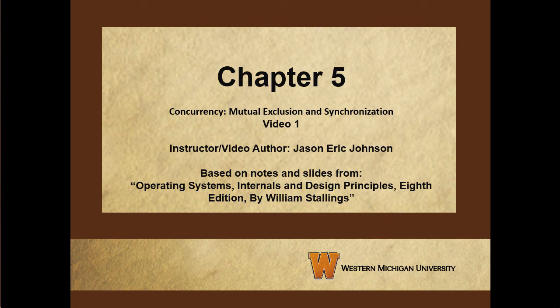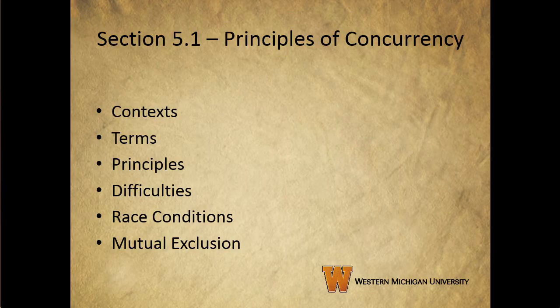Welcome back, everyone. This is the first video covering Chapter 5 from your Operating Systems textbook on concurrency, specifically on mutual exclusion and synchronization. This video will cover Section 1 of Chapter 5 on principles of concurrency. We'll look at the contexts in which concurrency becomes an issue, some related terms, principles of concurrency, the difficulties it creates, and specifically race conditions and mutual exclusion.